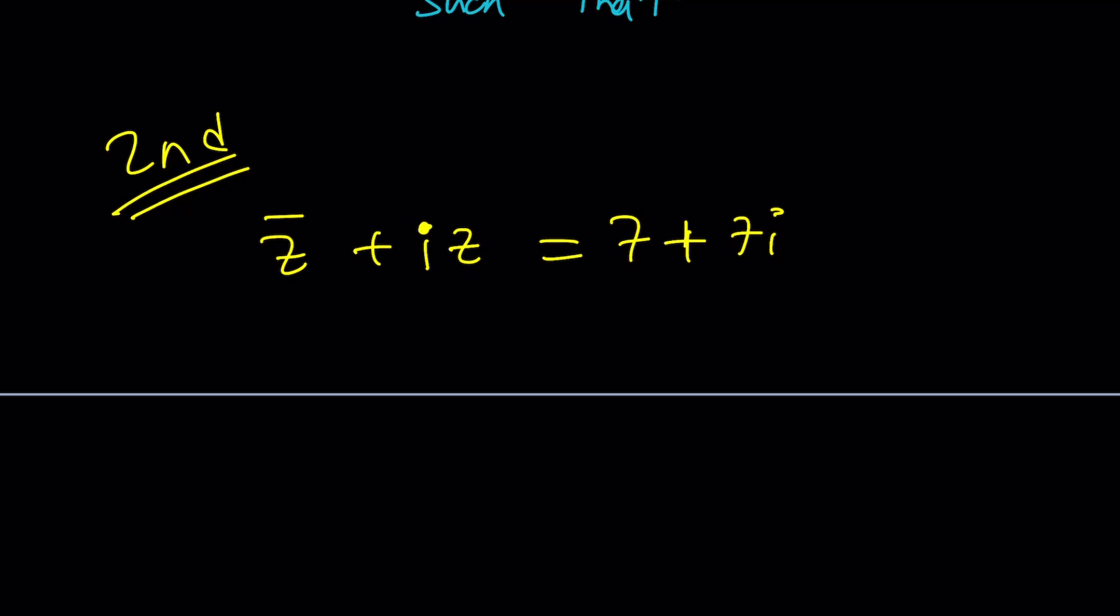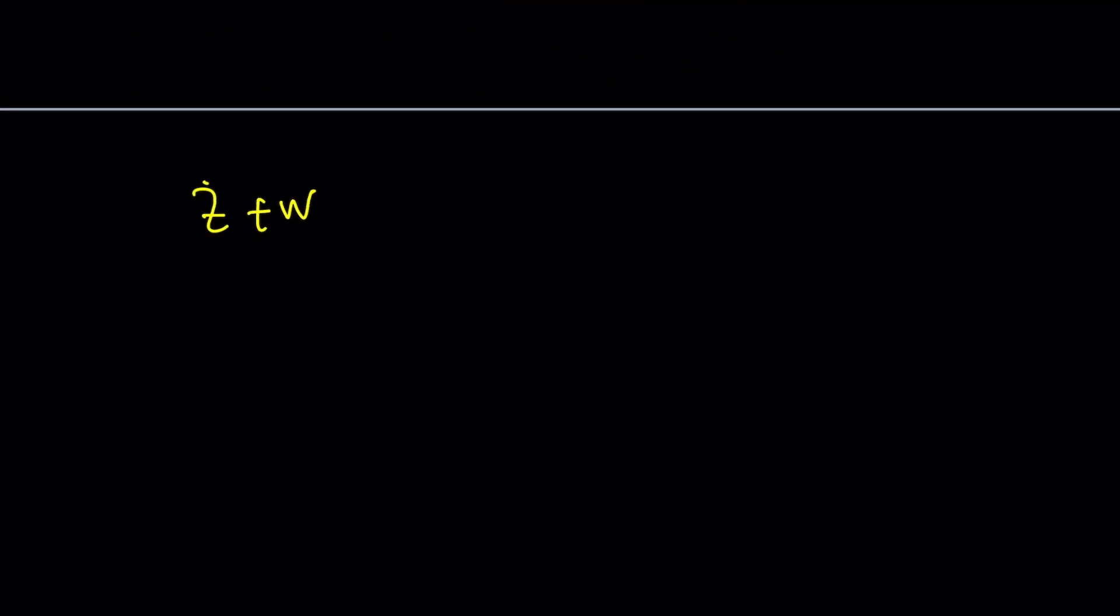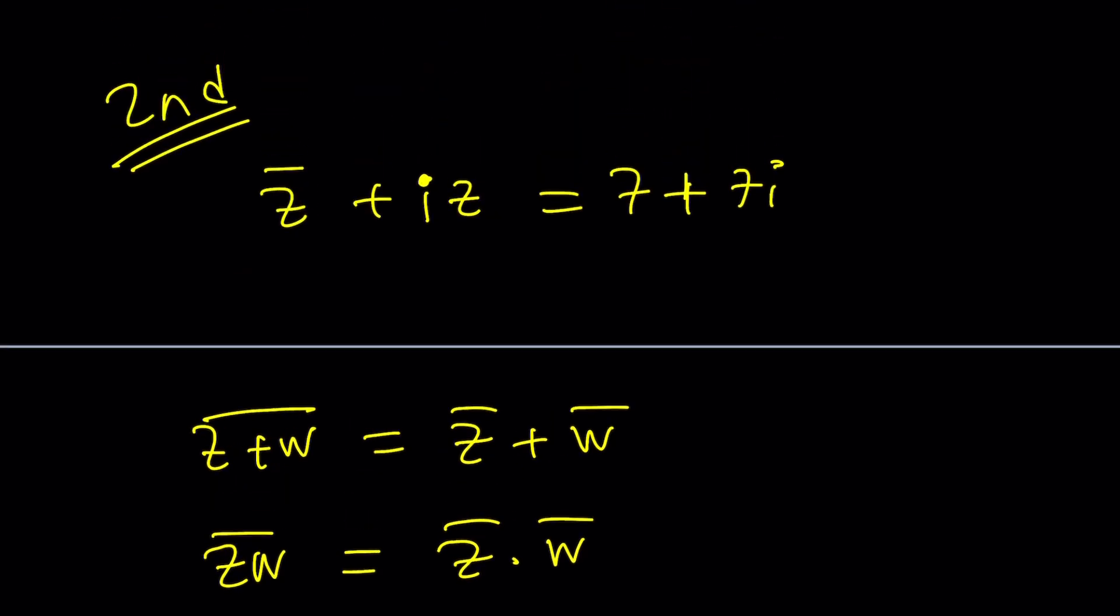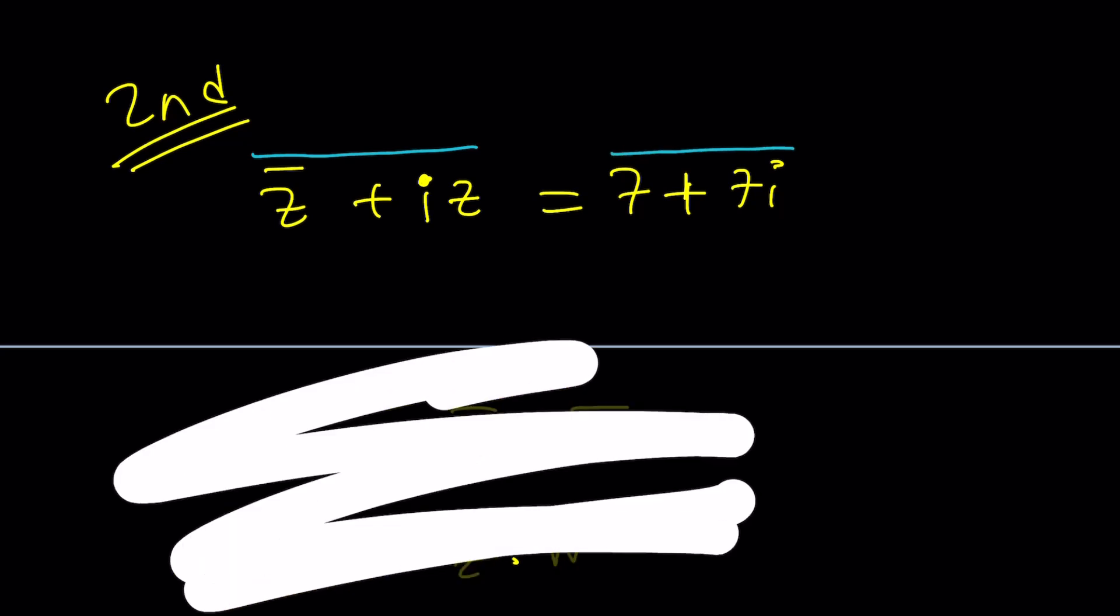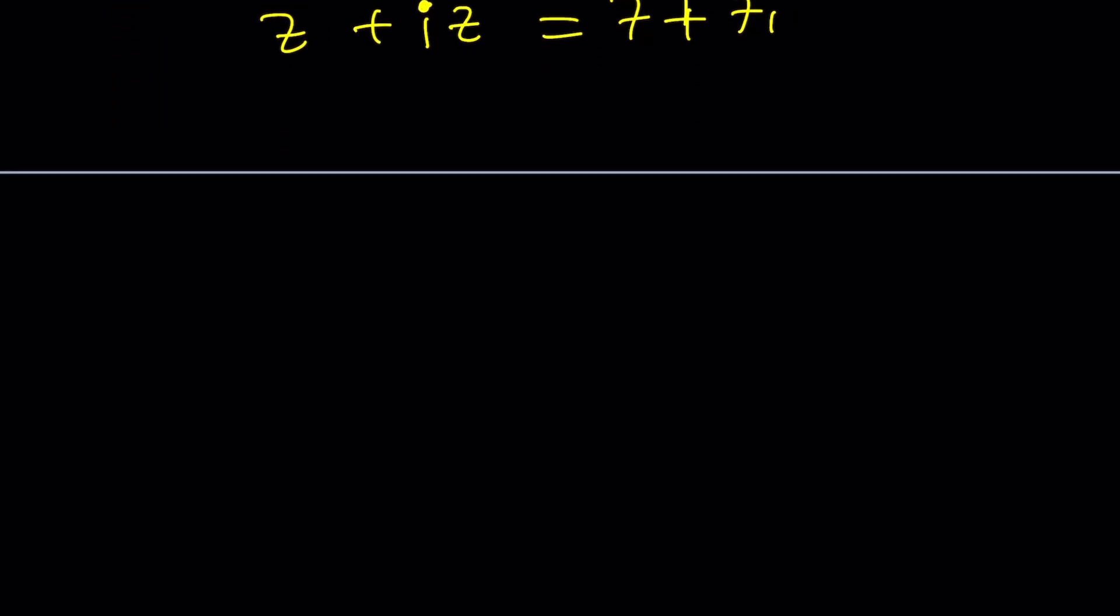What do we know about conjugates? If you have a Z plus W, and you conjugate it, it's going to be the sum of the two conjugates. If you have a product, that should also work, and I believe it works with division and subtraction, too. And these are very easy to prove, by the way. You can just go ahead and set Z equal to A plus BI, and W equal to C plus DI, and plug it in, and you'll see that both sides are equal. So, I can do the following. I can just conjugate both sides.